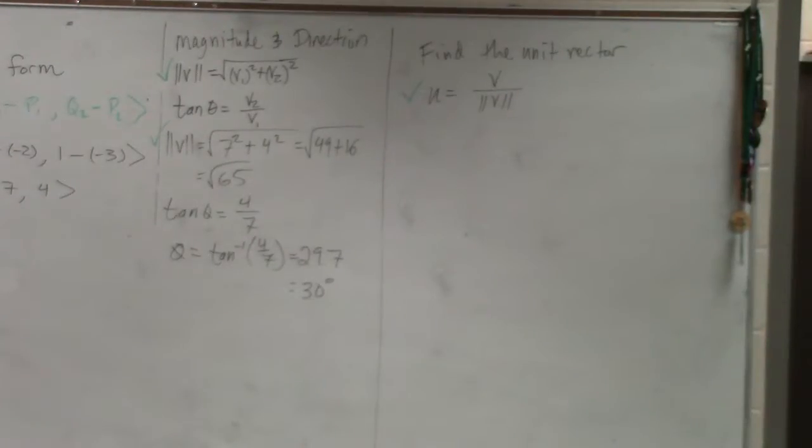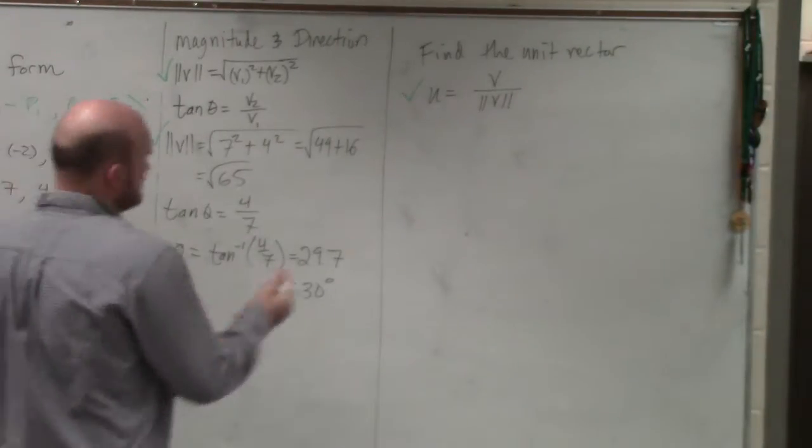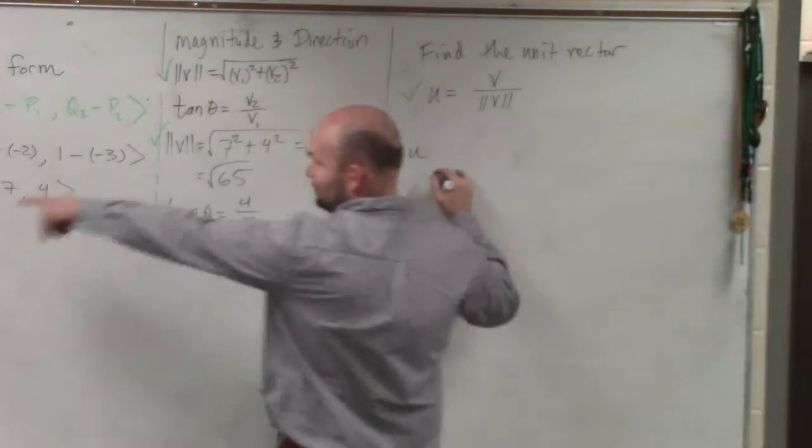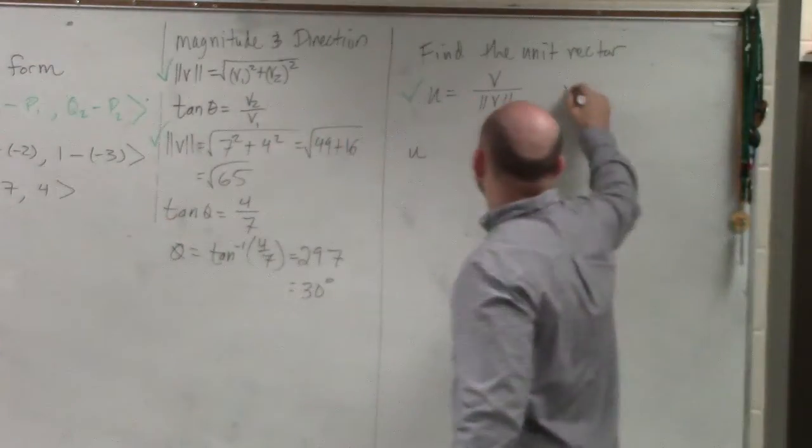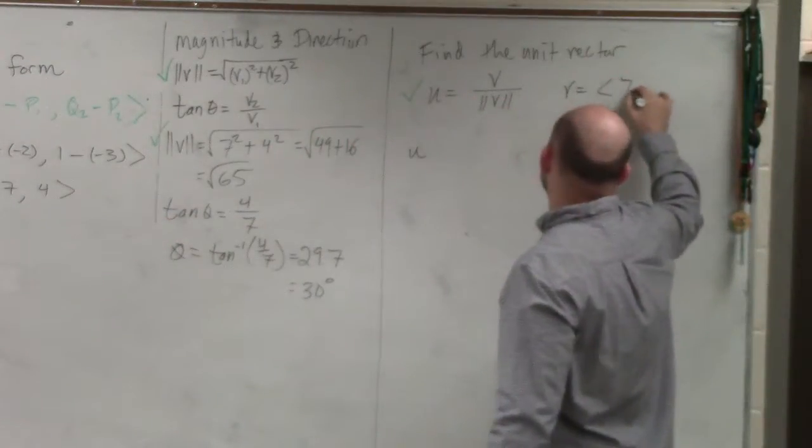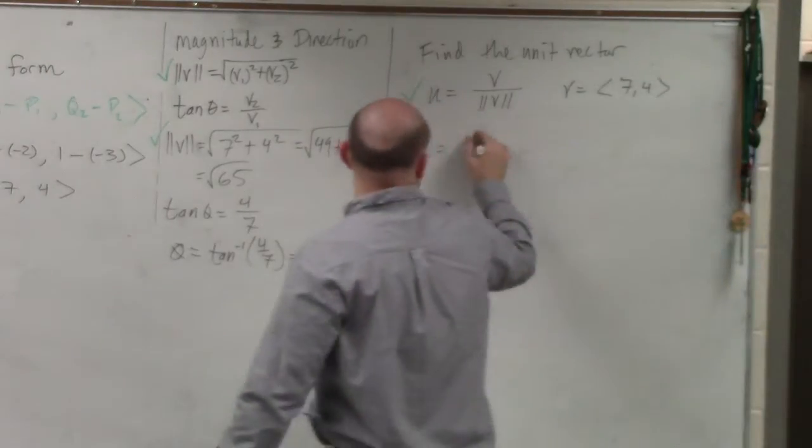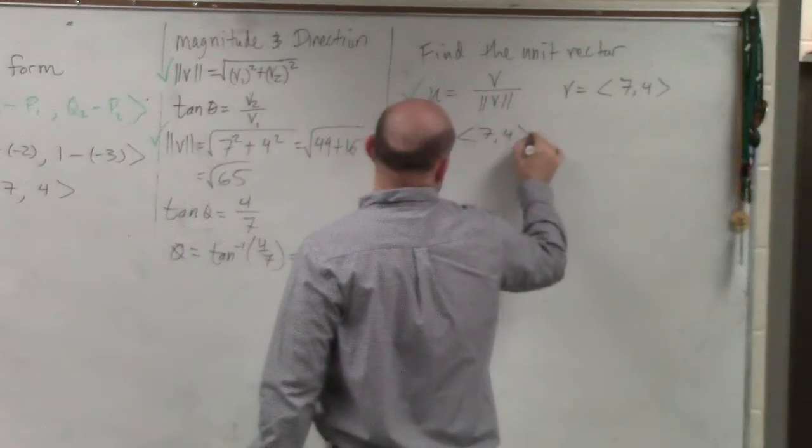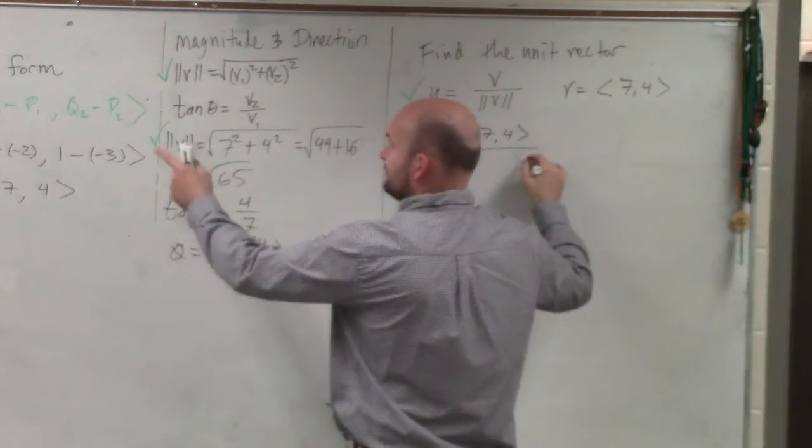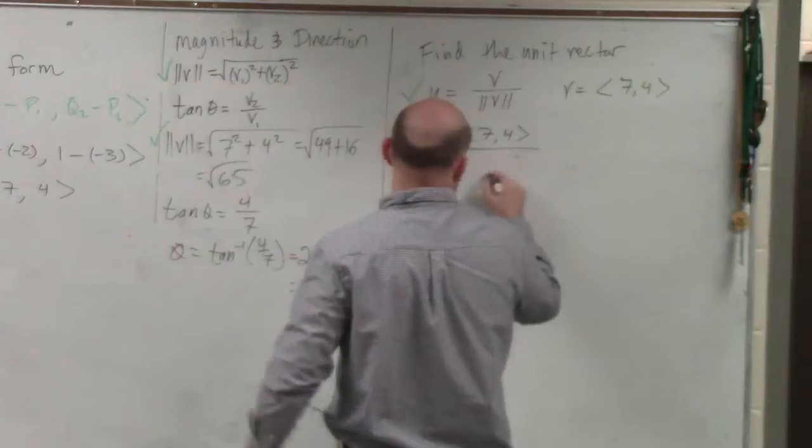If we go ahead and take a look at this, everybody, or at least the majority of people that I saw, if we have our vector v which is v equals 7 comma 4, and so if we're taking u, then that's basically going to be 7 comma 4 all over my unit vector, or my magnitude, which is square root of 65.